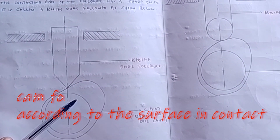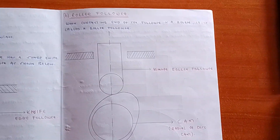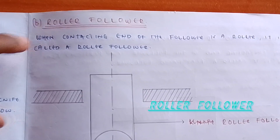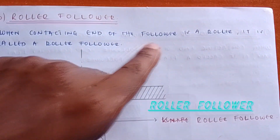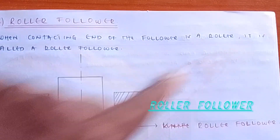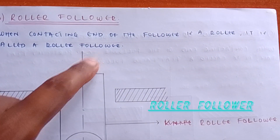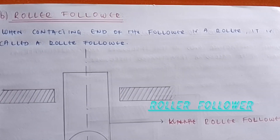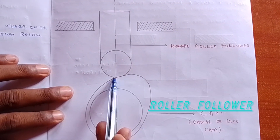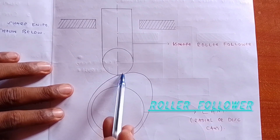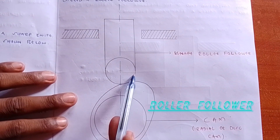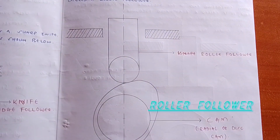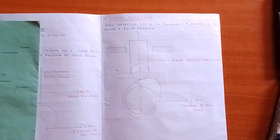The second classification is the roller follower. When the contacting end of the follower is a roller, it is called a roller follower. This point here — when it is a roller — it is called a roller follower. This is how you draw your roller follower, as you can see.